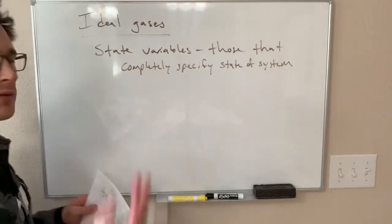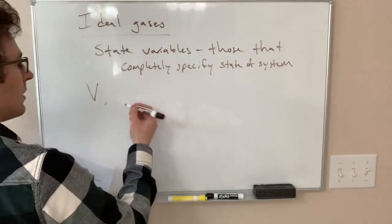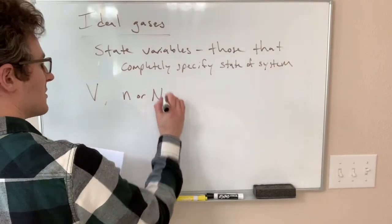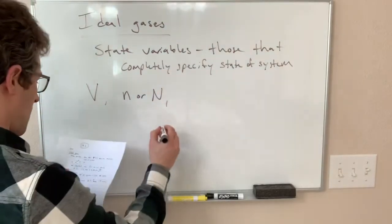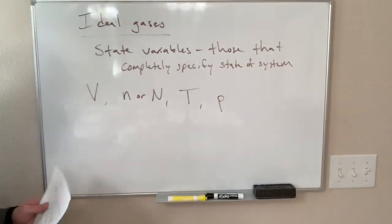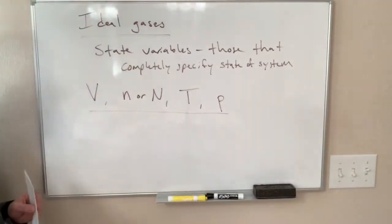Those variables are the following, we've already seen them all. The volume, the number of particles, either written in terms of moles or in terms of the actual number of particles, the temperature, and the pressure. So, these are our four state variables for an ideal gas.